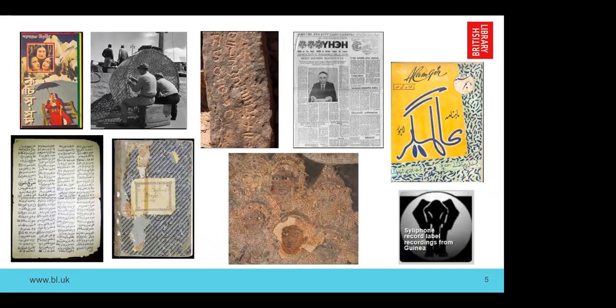Although it's called the Endangered Archives Program, we have an extremely broad view of what an archive can be. We consider printed material, photographs, and some of our earliest material is a project that digitized rock inscriptions in Libya. We've had projects digitizing newspapers, journals, manuscripts, ecclesiastical records, court records, and even temple murals — one image is from a Jain temple. We also digitize sound material; at the moment we have 25,000 sound recordings available online. We fund projects where the sound might be on a format that is at risk, but we don't fund the creation of oral histories.